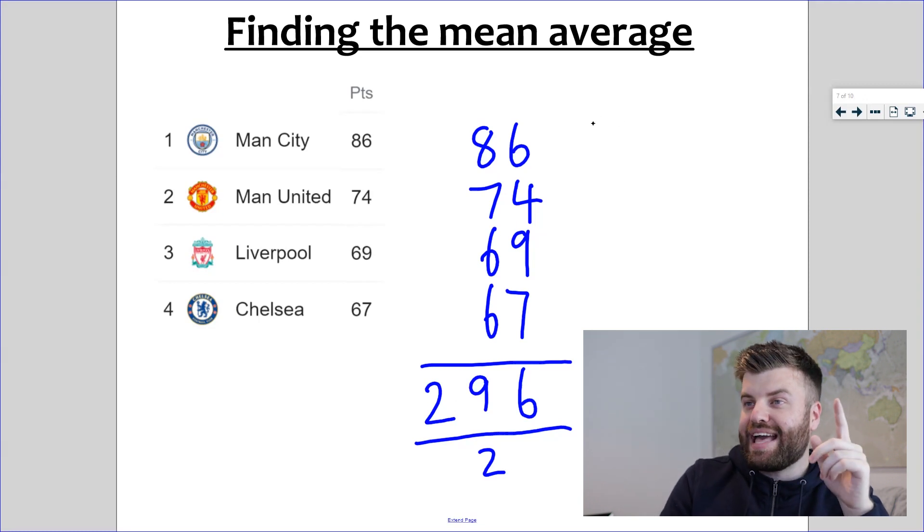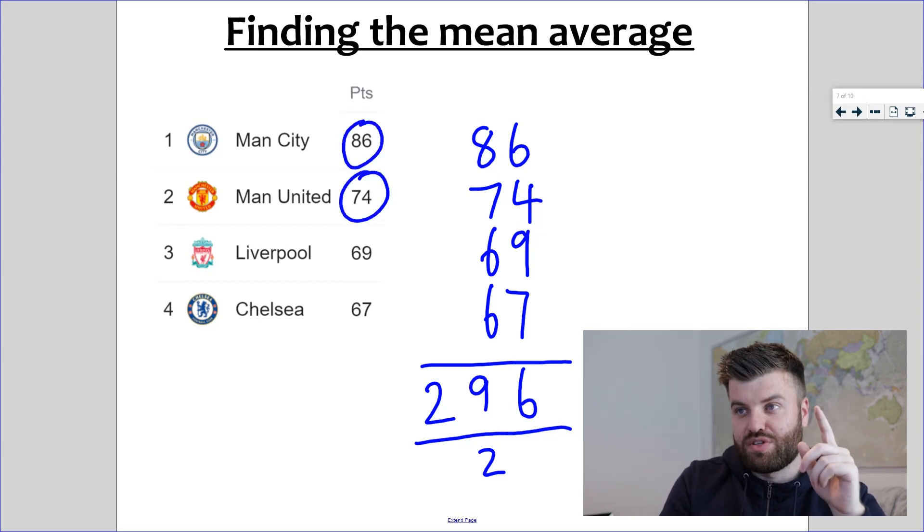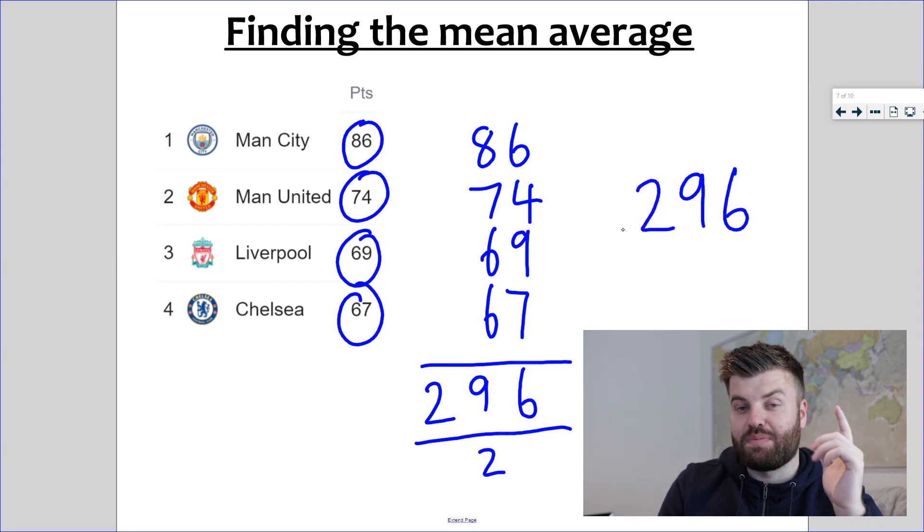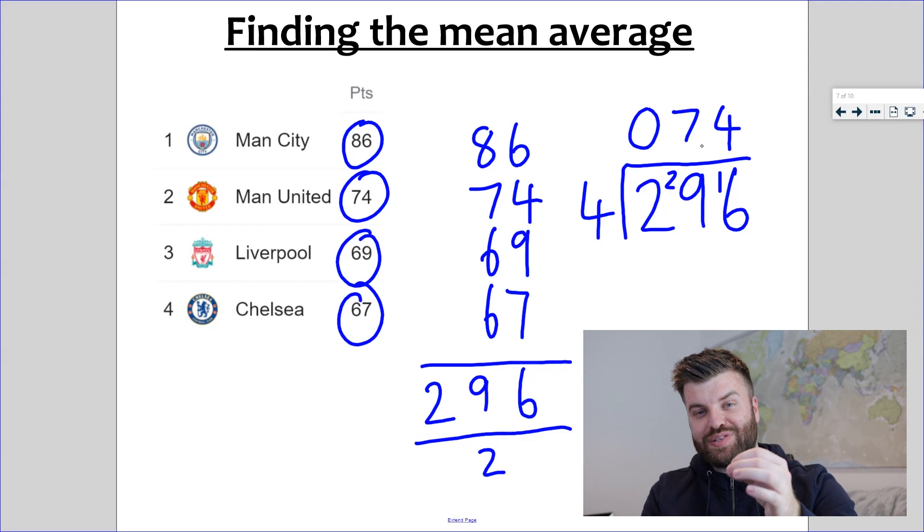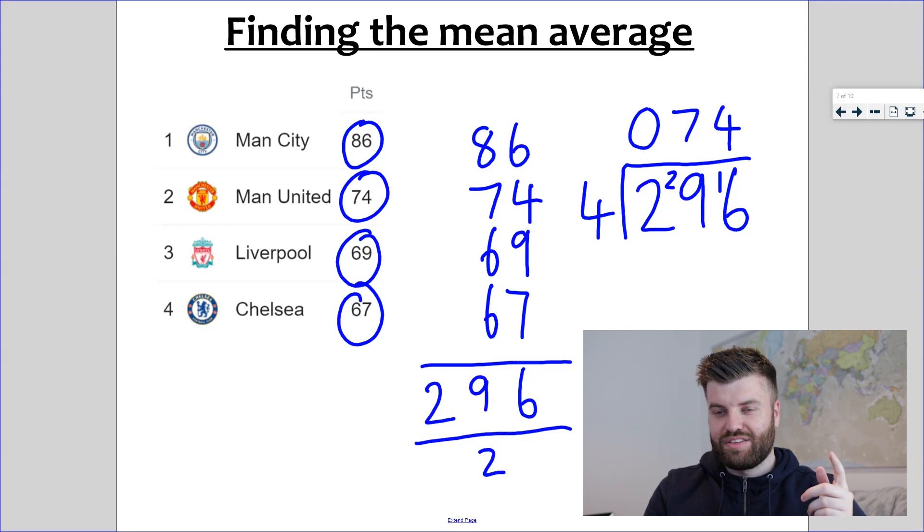But that's not the mean. Step two, always remember step two. I had four pieces of data, so I'm going to take my total, two hundred and ninety-six, and I'm going to use the bus stop method this time because it's a larger number. I can't just rely on my times tables anymore to divide it by four. The average number of points scored by the top four teams in the Premier League last season was 74 points. You can calculate the mean average now, easy.